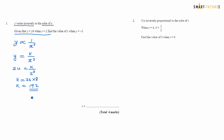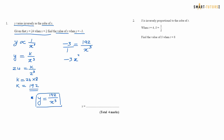So you can write the equation as y equals 192 over x cubed. Now the question asks: find the value of x when y equals minus 3. So minus 3 equals 192 over x cubed. Cross multiplying: minus 3 times x cubed equals 192. So x cubed equals 192 divided by minus 3, which is minus 64. So x equals the cube root of minus 64, which is minus 4.